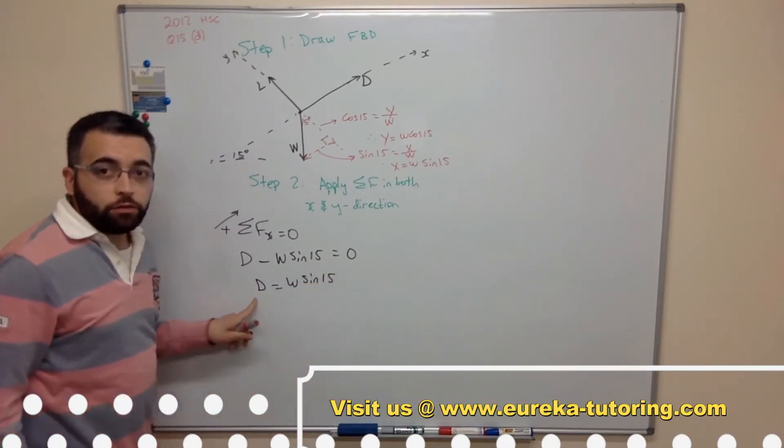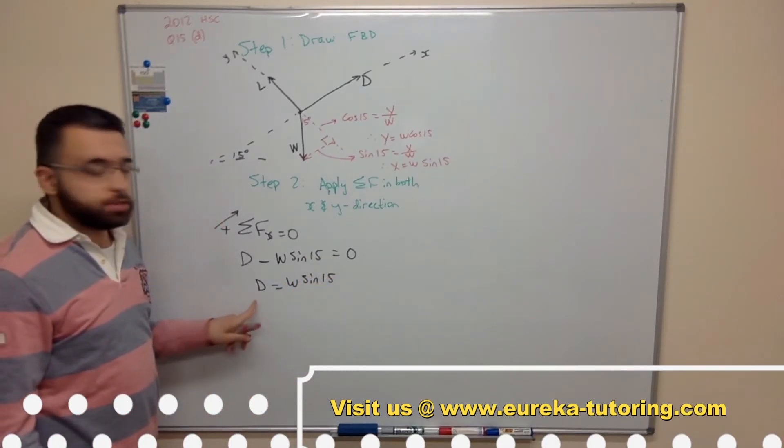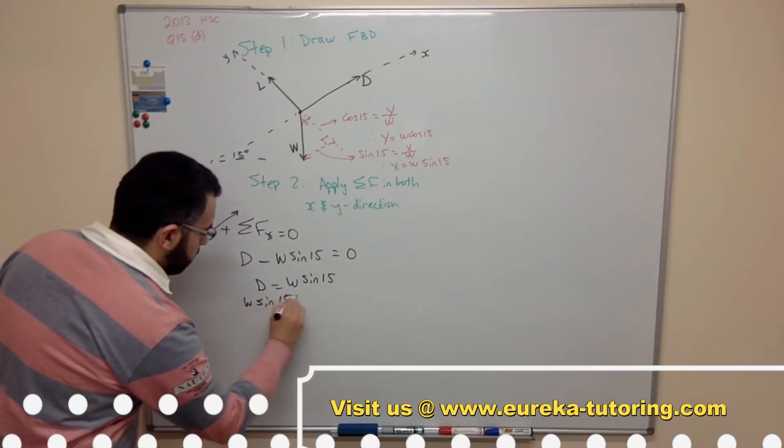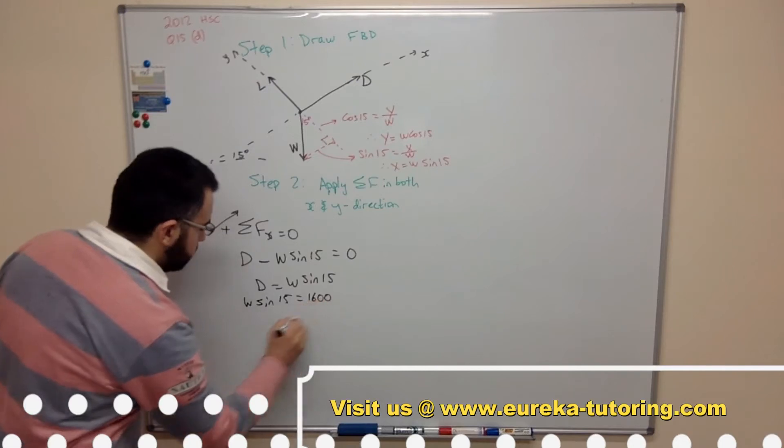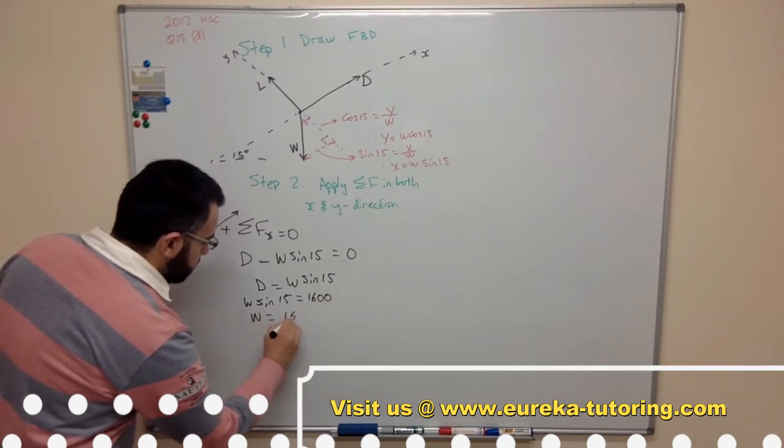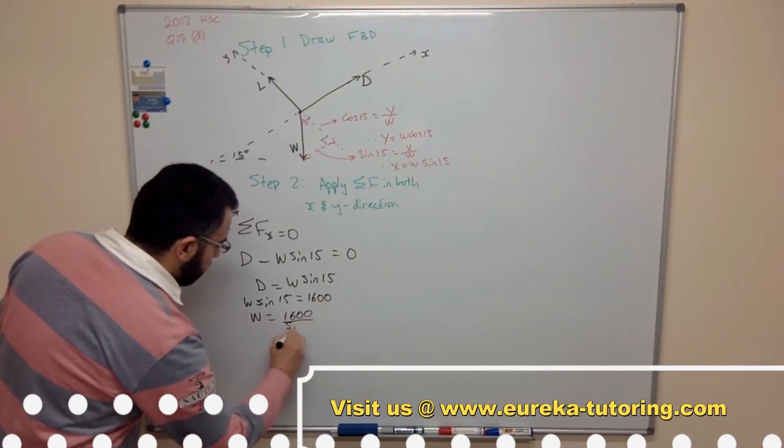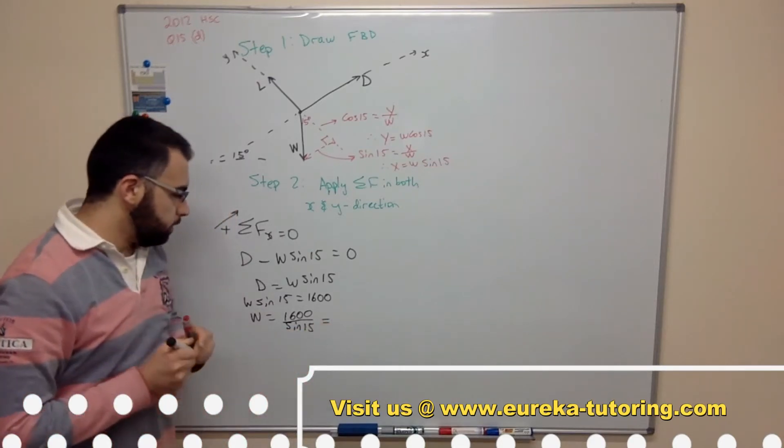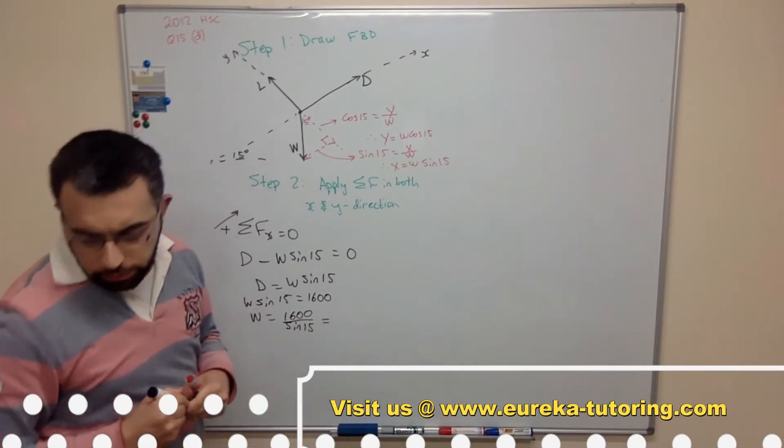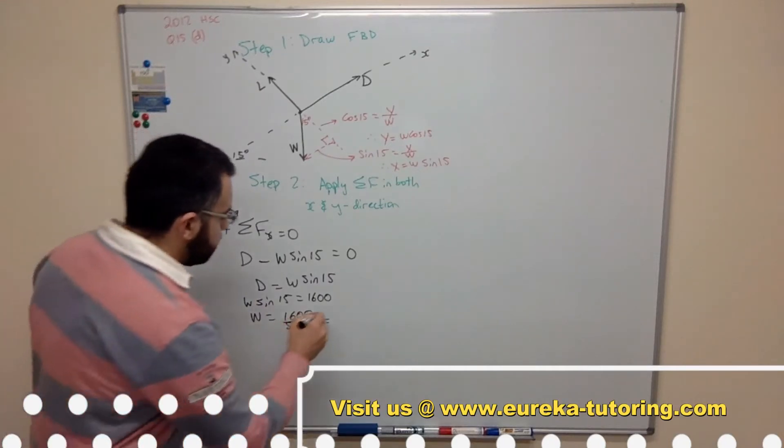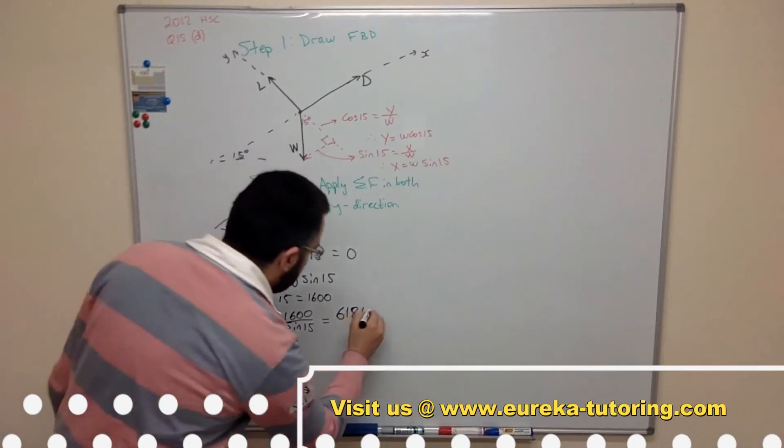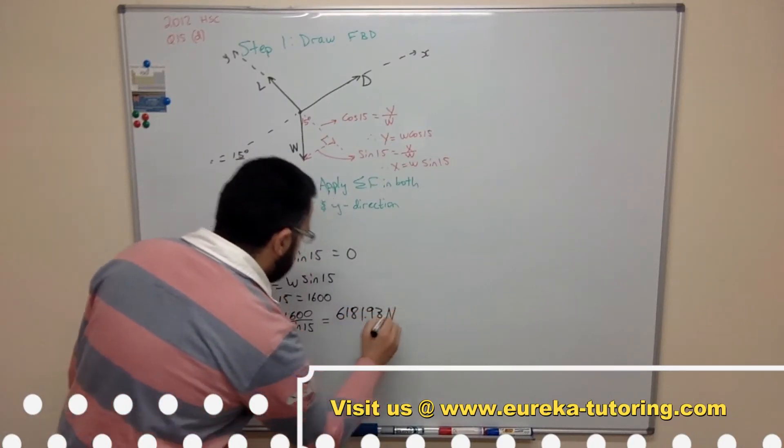Now I know what the drag force is. It's given in the question which was 1600. So w sine 15 equals 1600 newtons. W equals 1600 divided by sine 15. And that should give me 6181.93 newtons.